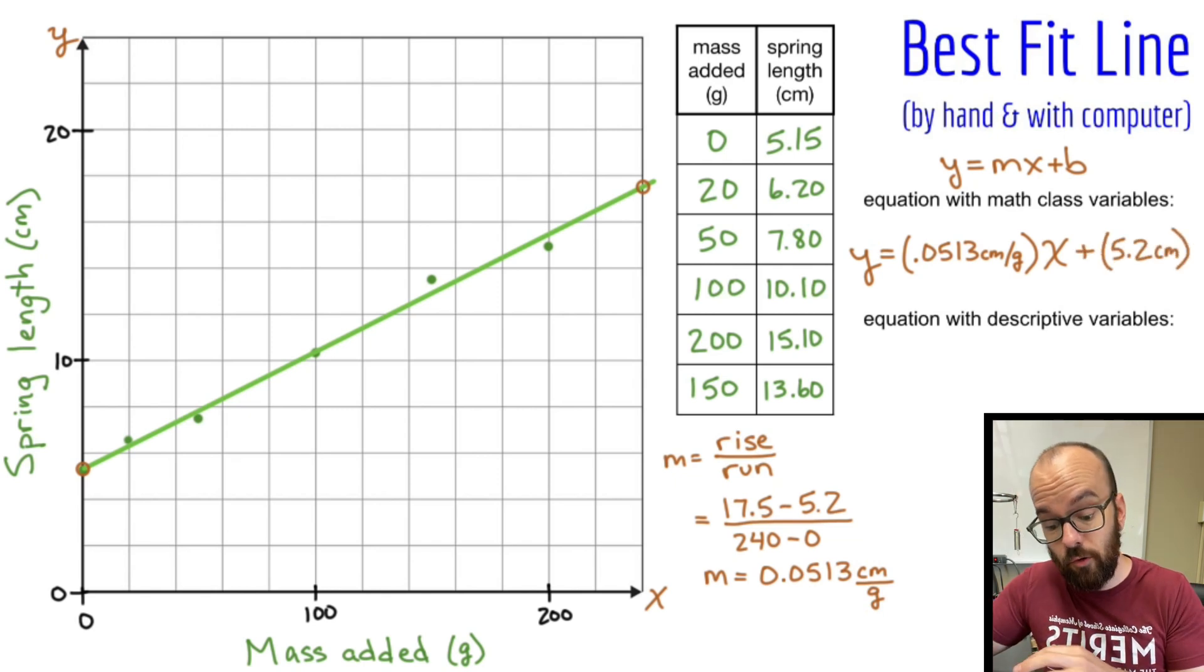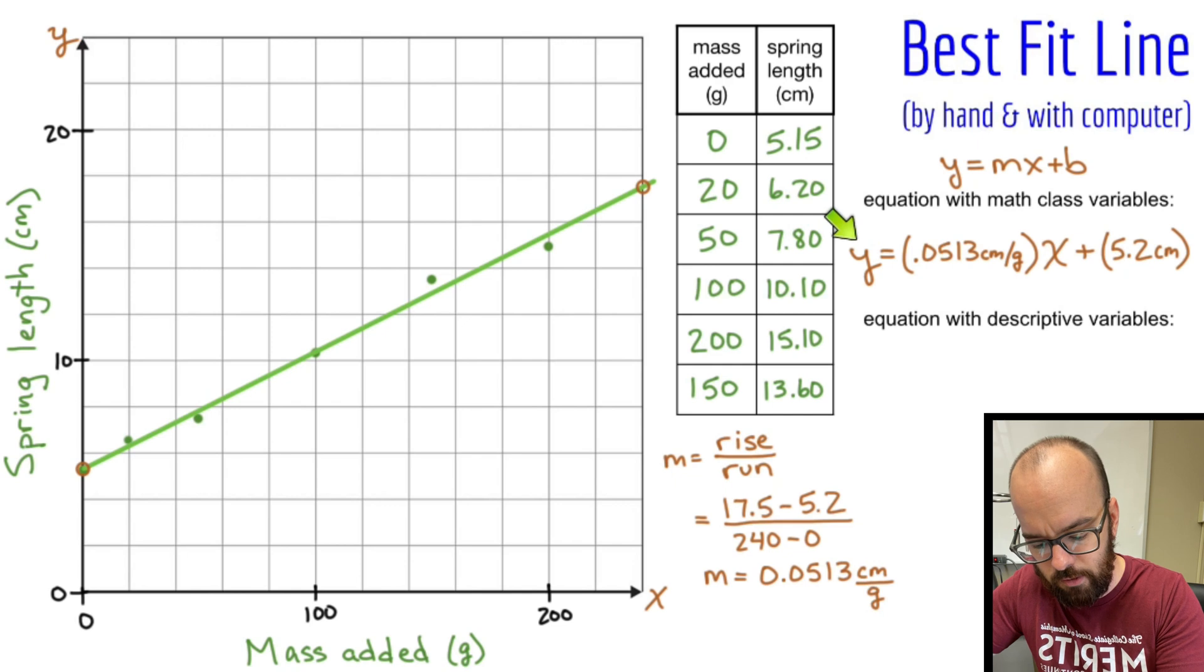So that's my equation for this best fit line. And I'm going to write it one more way because I'm not really interested in just the pure math of it, like x and y. I'm really interested in the physical quantities. So what are my actual physical quantities?